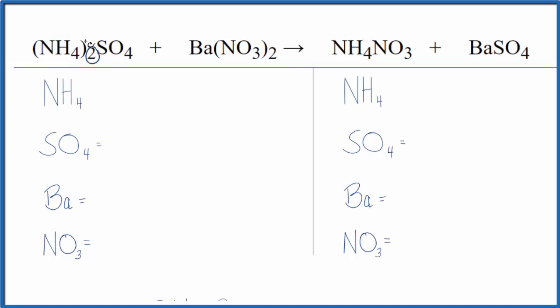So we have two times this one ammonium ion. That gives us two ammonium ions here, and then the sulfate. Same thing. We have a sulfate here and a sulfate here. So we have one sulfate, one barium, and then nitrates. Two nitrate ions. We'll put a two here.